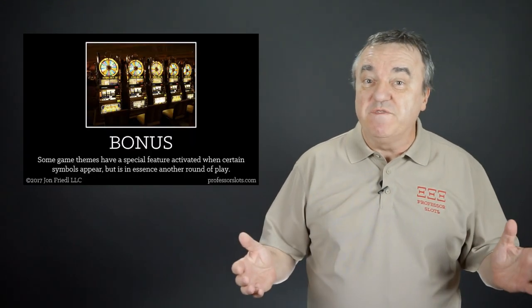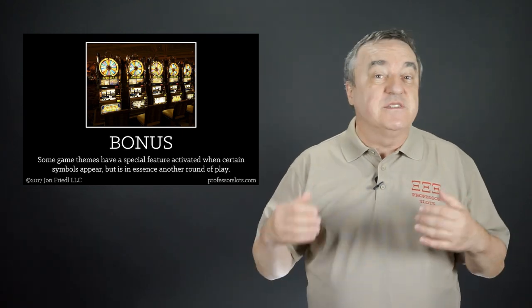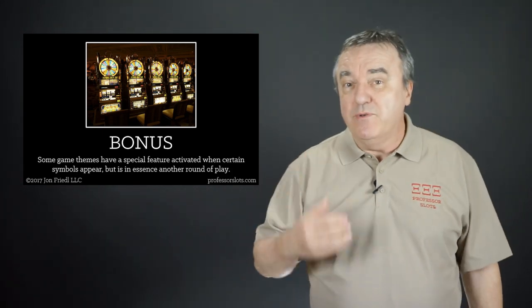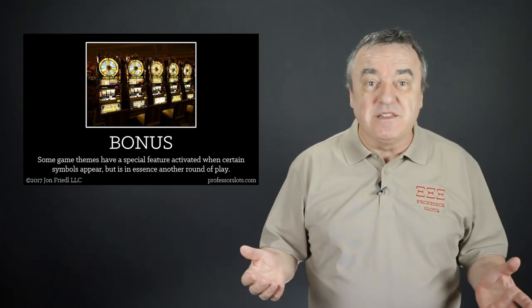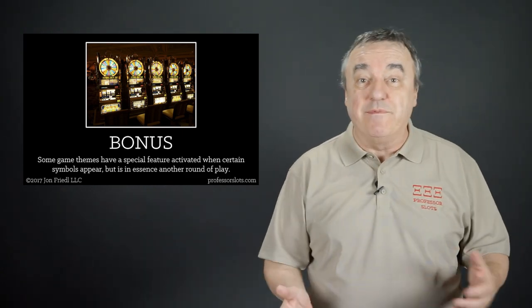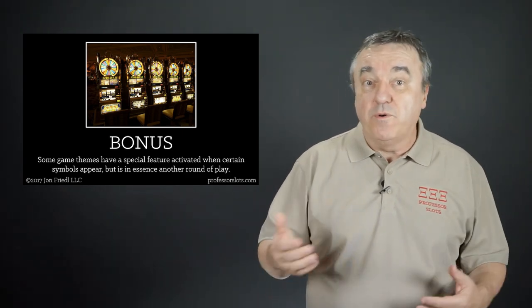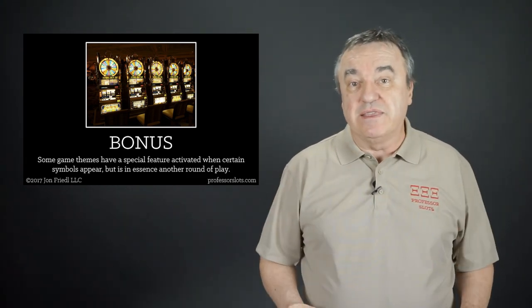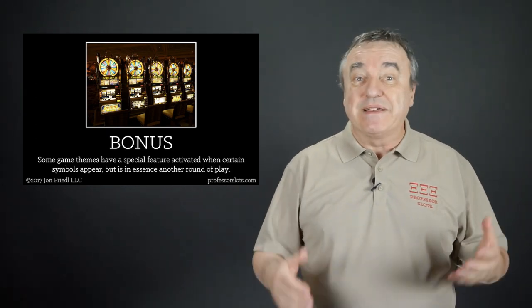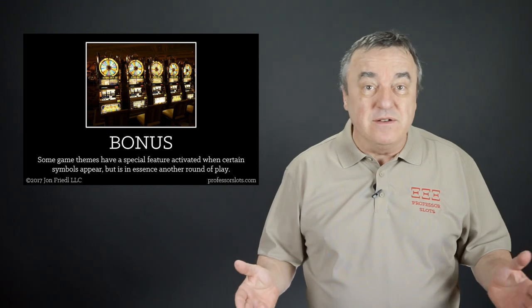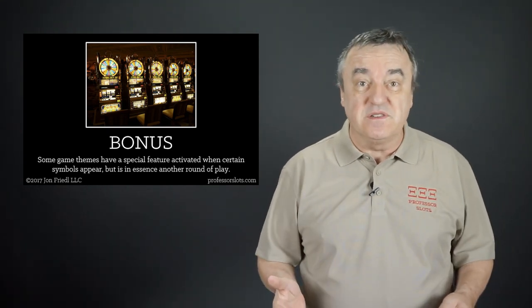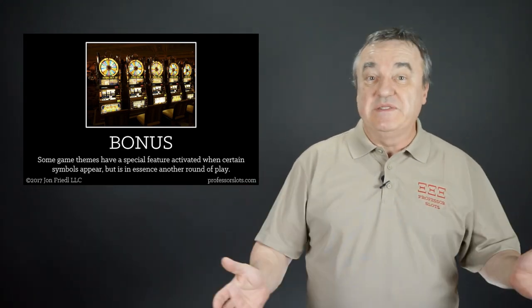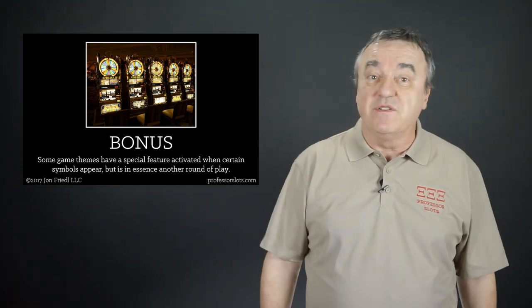Some game themes have a special feature activated when certain symbols appear. The specific bonus varies with the game but is an additional round or rounds of play. This bonus round may include free spins, possibly with a different theme from the primary game, as well as a multiplier. Or the bonus round may give the player a choice of picking between several items on a screen, each revealing the number of credits awarded. Some bonuses use a mechanical device, possibly the primary reels or additional reels, or an entirely different spinning wheel, prominently displayed to garner other players' attention from a distance. Some slot machines have multiple styles of bonus rounds.